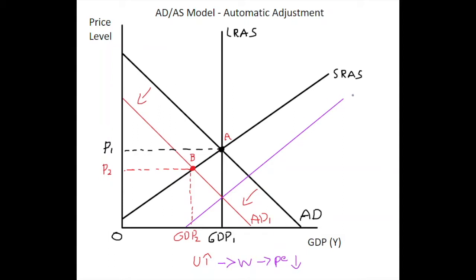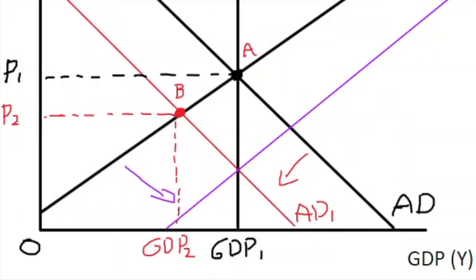And this mechanism causes the short-run aggregate supply curve to increase or shift rightwards. How long this will take is a big question and this is what a lot of macroeconomists talk about. But if it does shift rightwards enough, what we will do is we will return to our long-run aggregate supply curve, our potential output level at point C.